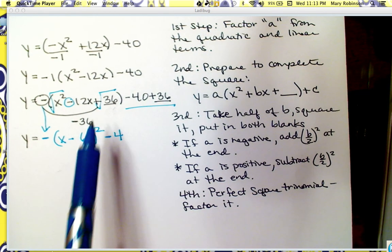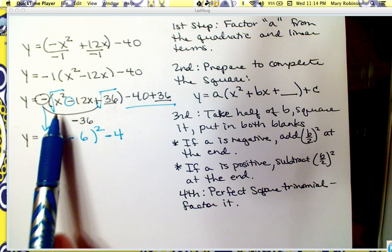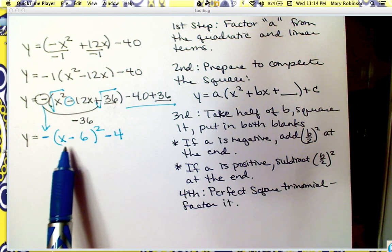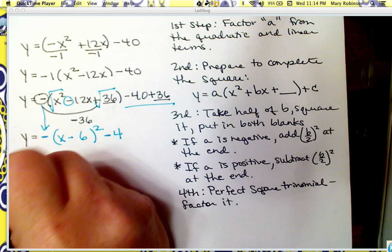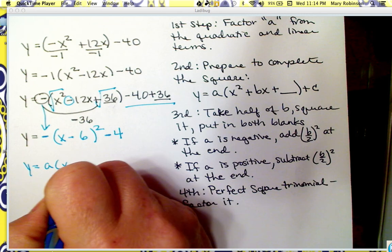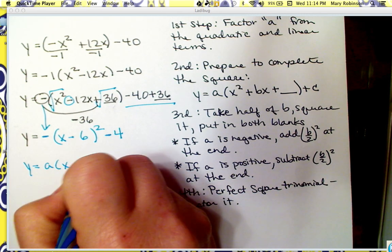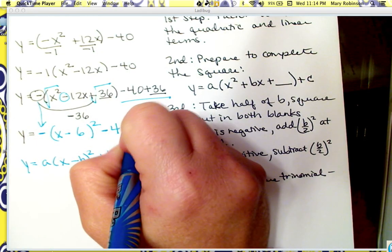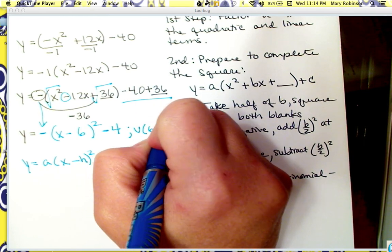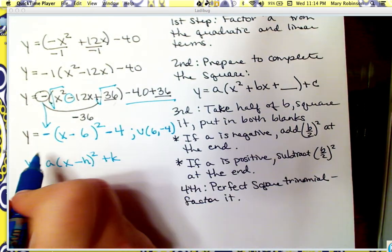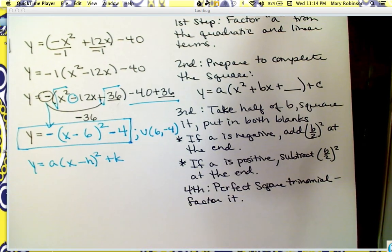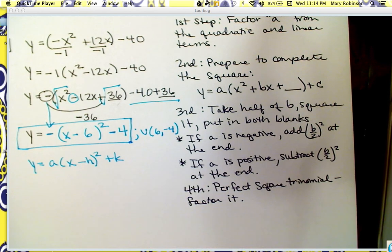Because we really introduced a negative 36 that was not there, we want to add 36. Then we factored our perfect square trinomial, bringing down our a value, taking the square root, keeping the sign, taking the square root — making sure it's in the form a times the quantity x minus h, squared, plus k. Our vertex for this one is 6, negative 4, because we switch-keep the h.